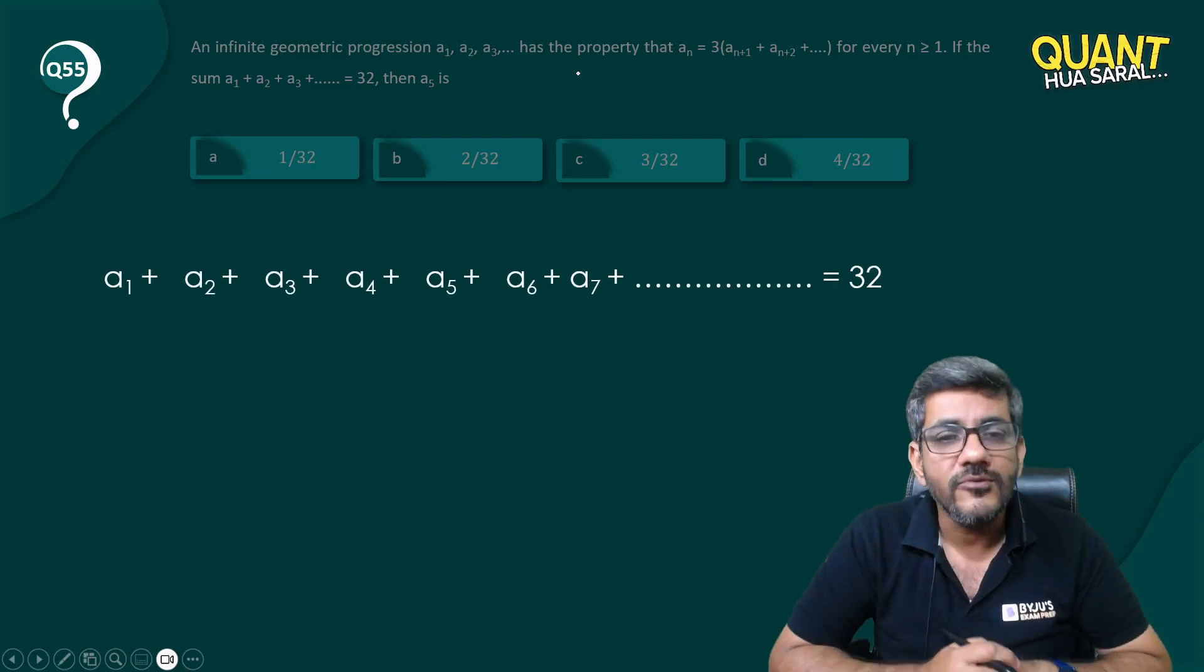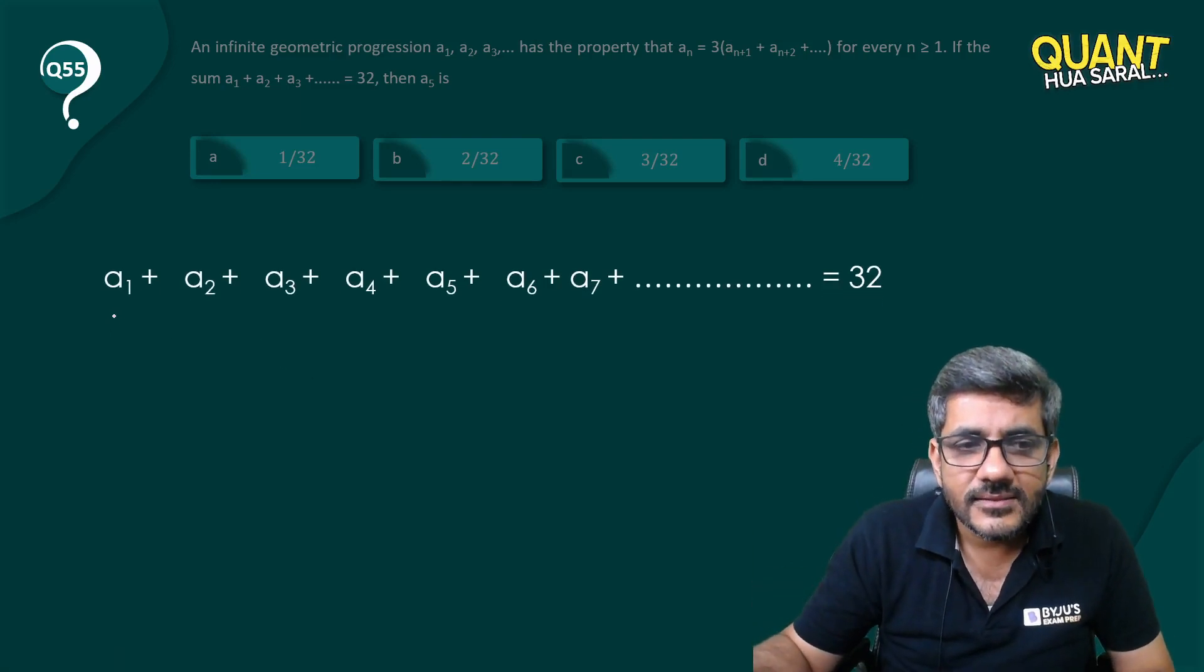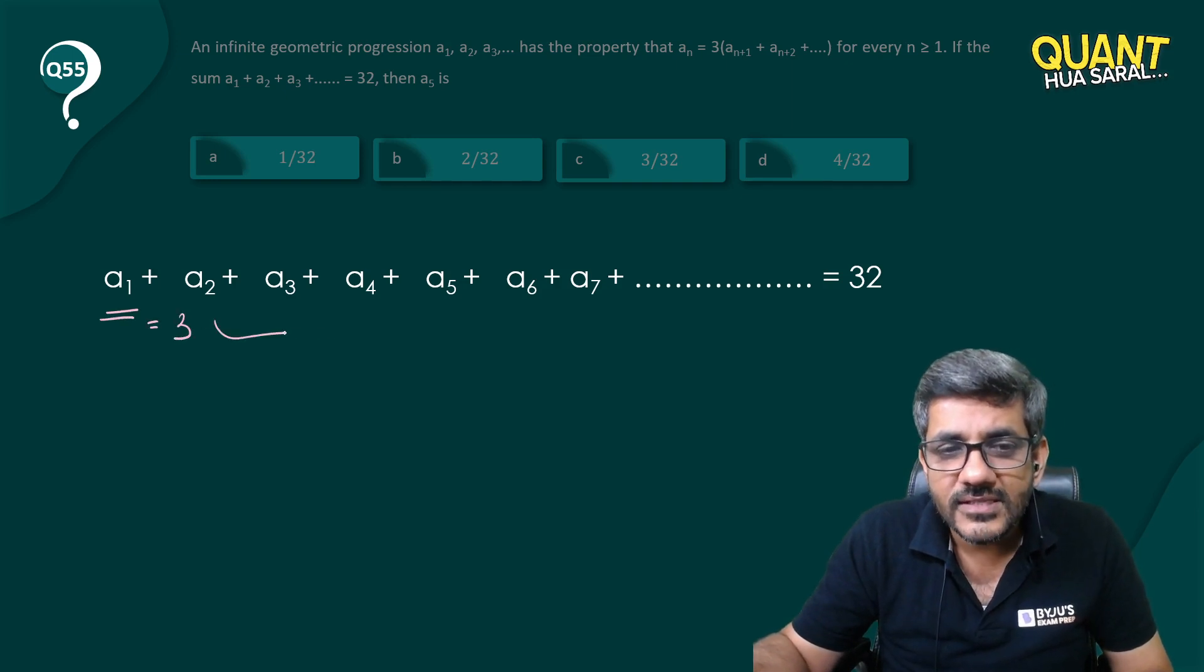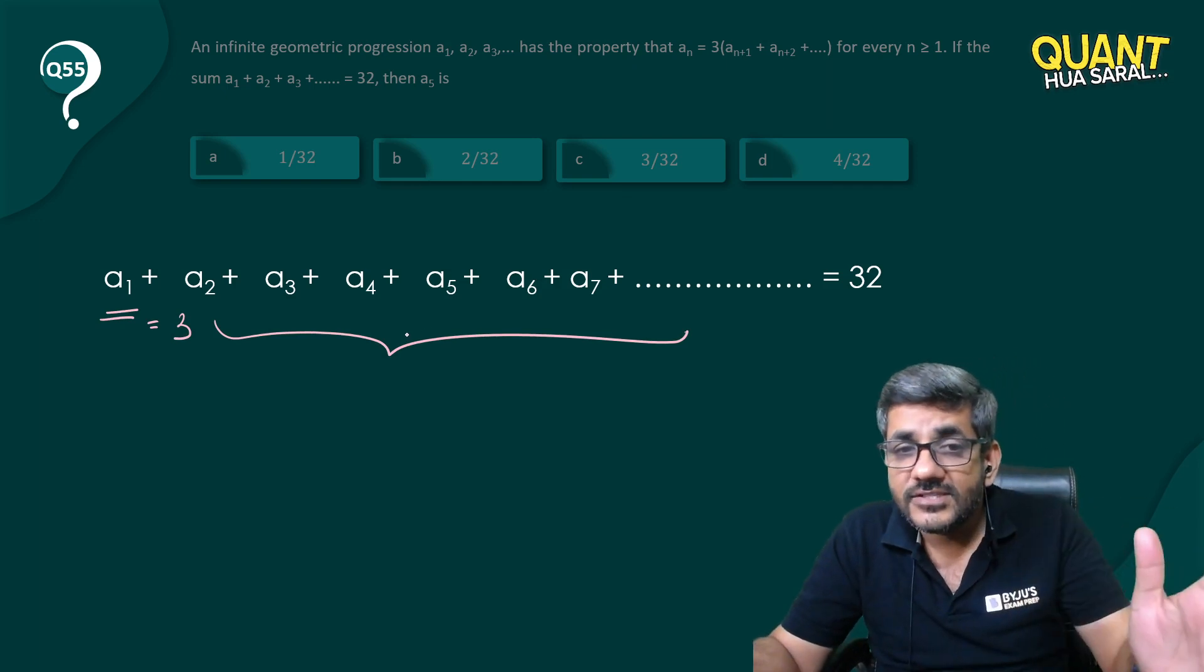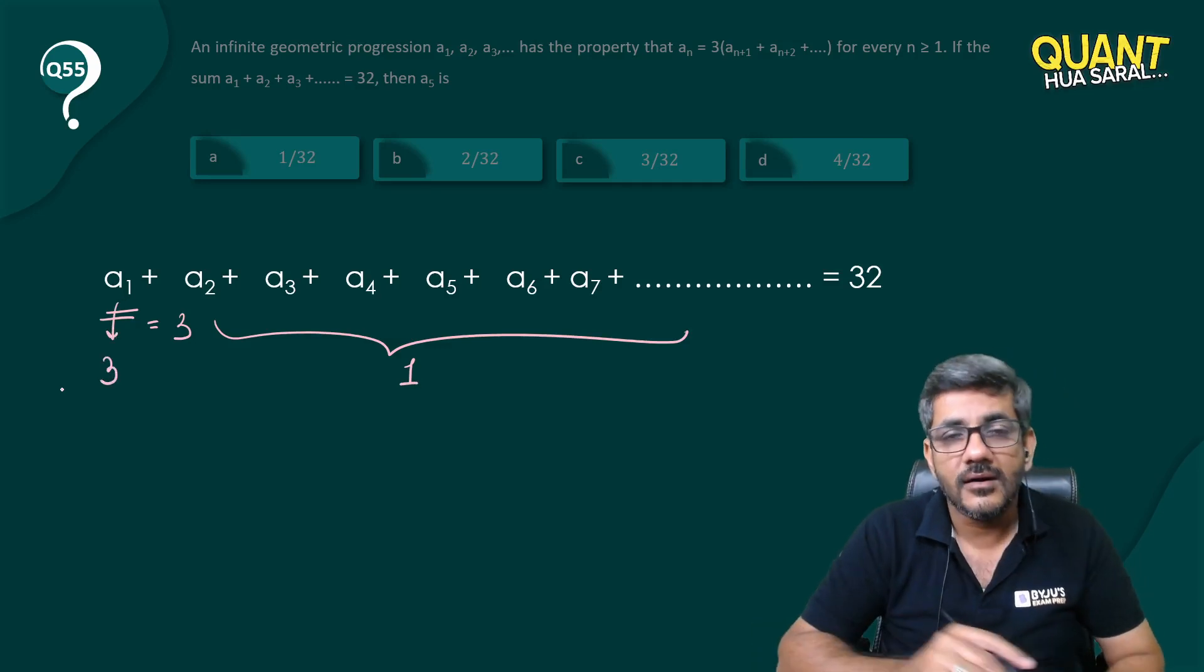Let me write the series here for all of you. Just have a look at this. He says a term is equal to three times the sum of all the upcoming terms. So can I say if the sum of all upcoming terms is one, then that term is equal to three, right everyone?